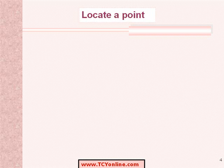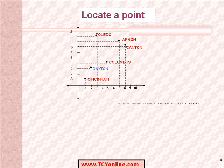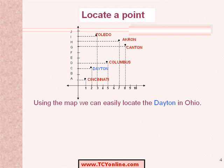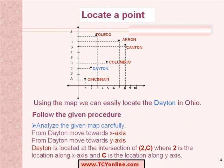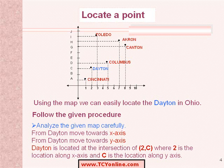We shall now see how to locate a point using a map. Look at the map shown. Here, we need to locate Dayton in Ohio. We will follow the given procedure. First of all, we would locate Dayton and then move towards the x and y-axis from that particular point. We will find that Dayton is located at the intersection of 2, c, where 2 is the location along the x-axis and c is the location along the y-axis.